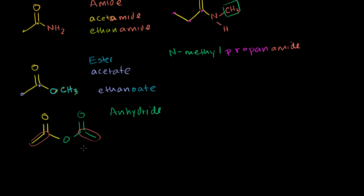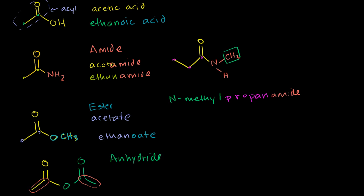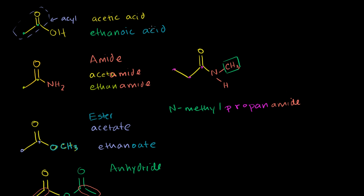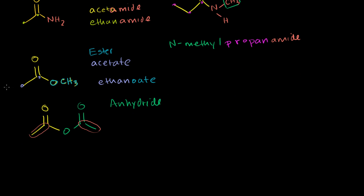So the way to name these is you name it just the same way that you would have named the carboxylic acid. But instead of writing the word acid, you write the word anhydride. So this right here would be acetic anhydride. It's derived from acetic acid. This right here is acetic anhydride, or the systematic name is you have one, two carbons. So it's ethanoic anhydride.